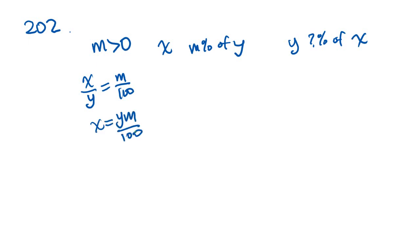202. It says, if M is greater than zero and X is M percent of Y, then in terms of M, Y is what percent of X? Tricky, tricky. The key to solving this problem is to just make sure that you know how to set up your ratios. So the first thing they told us is that X is M percent of Y, right? So the setup ratio, X over Y equals M over 100. Then what you get is X equals YM over 100.